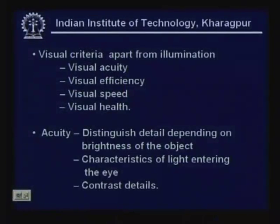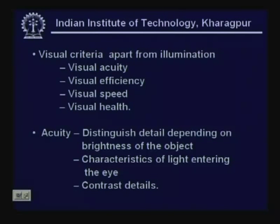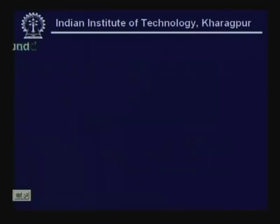Now let us formally define acuity. Acuity is the ability of the eyes to distinguish details, depending on the brightness of the object, keeping in mind the contrast details and the nature of the light that enters the eye.